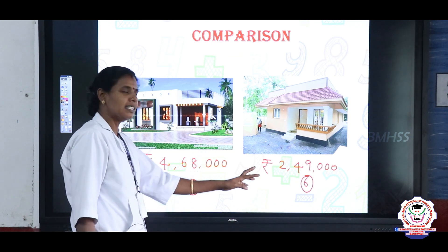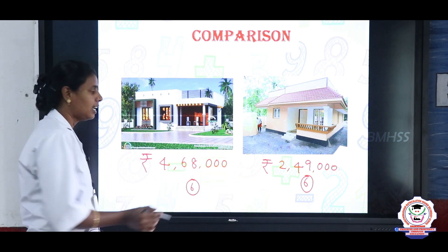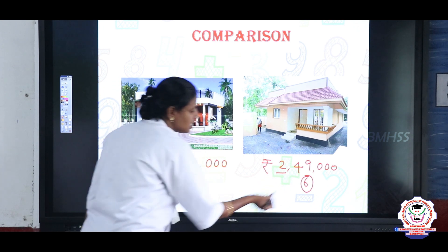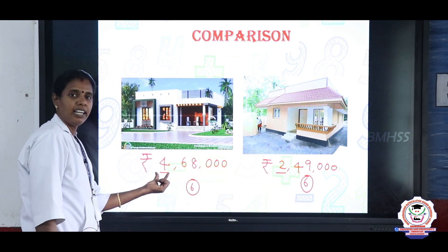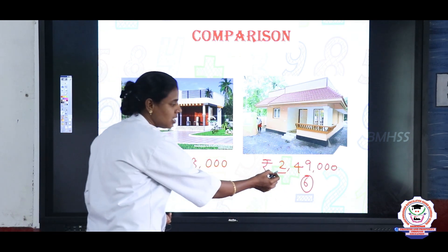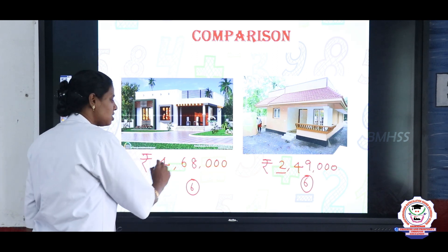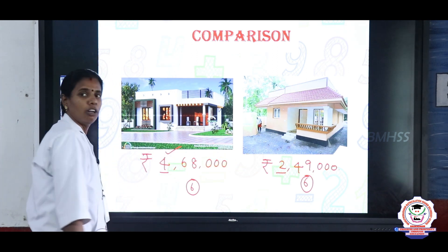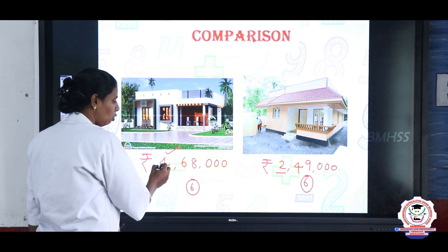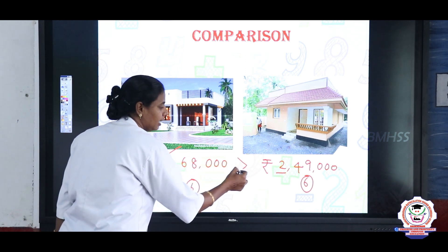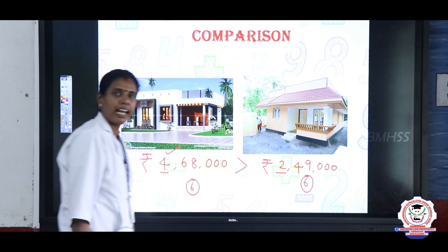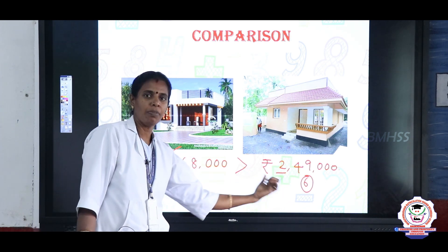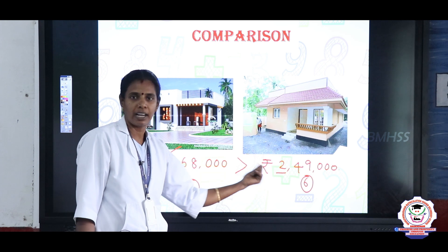When both numbers have the same number of digits, we first check the digit in the lakhs place. Here it is 4 lakh and here it is 2 lakh. Which is greater among 4 and 2? 4 is greater. So 4,68,000 is greater than 2,49,000. Is it clear how to compare numbers when they have the same number of digits?